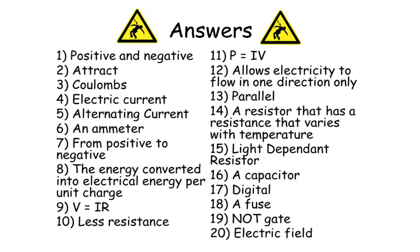Number eleven: P equals IV. Number twelve: allows electricity to flow in one direction only. Number thirteen: parallel. Number fourteen: a resistor that has a resistance that varies with temperature. Number fifteen: light dependent resistor. Number sixteen: a capacitor. Number seventeen: digital. Number eighteen: a fuse. Number nineteen: NOT gate. And finally, number twenty: electric field. Okay guys, how well did you do? Bye for now!